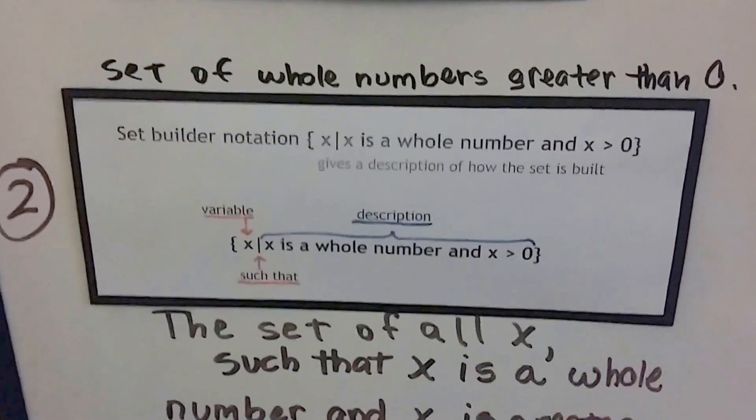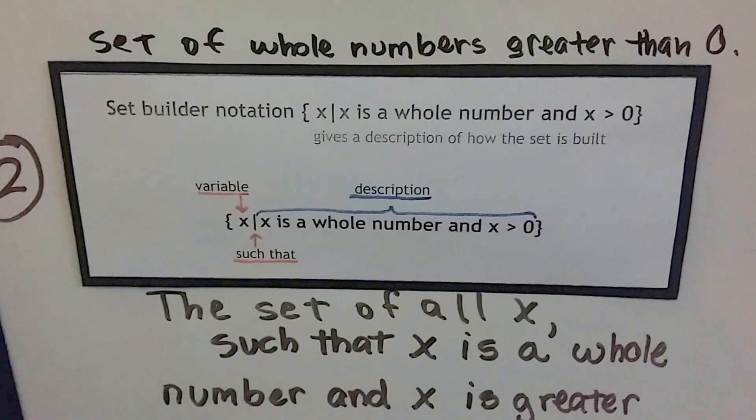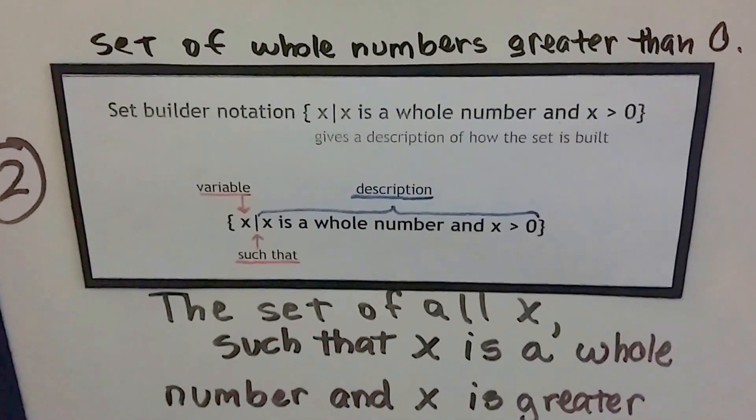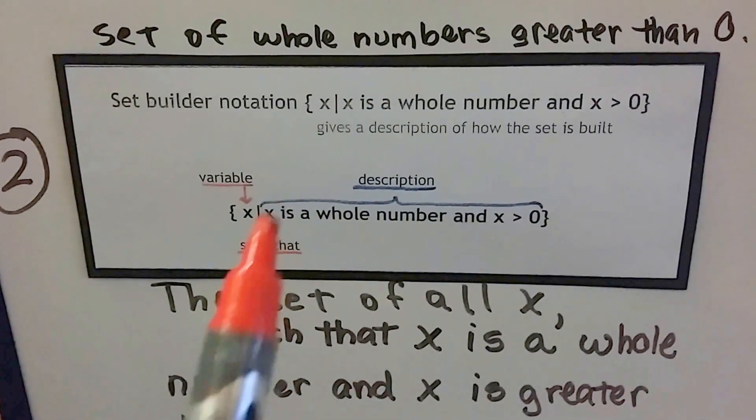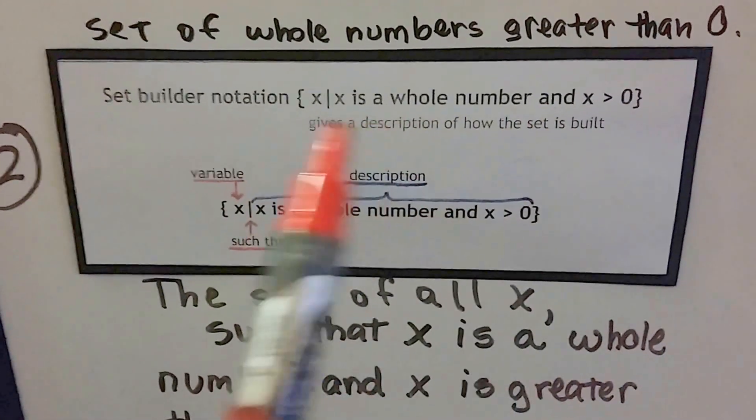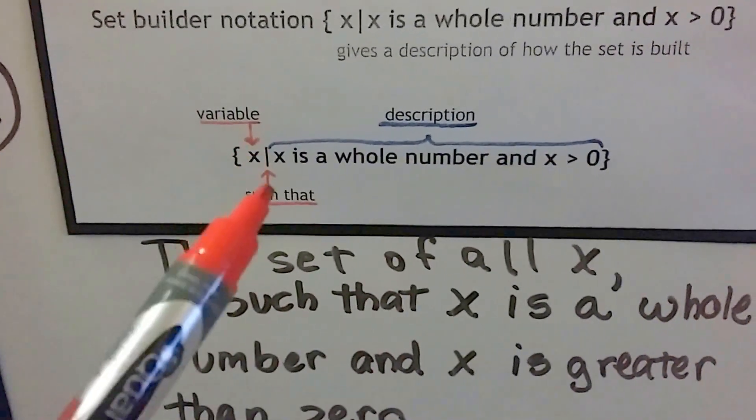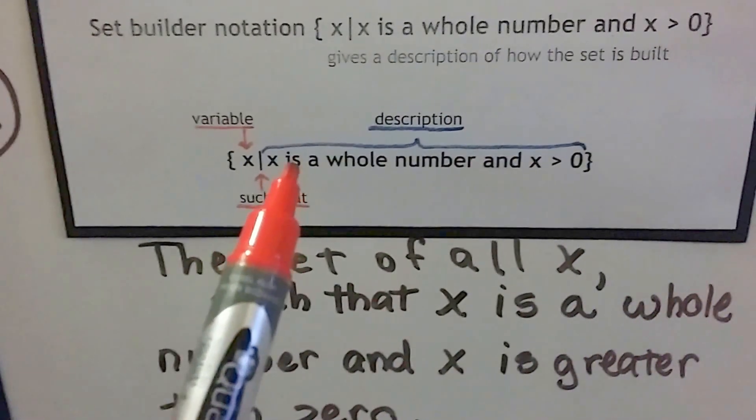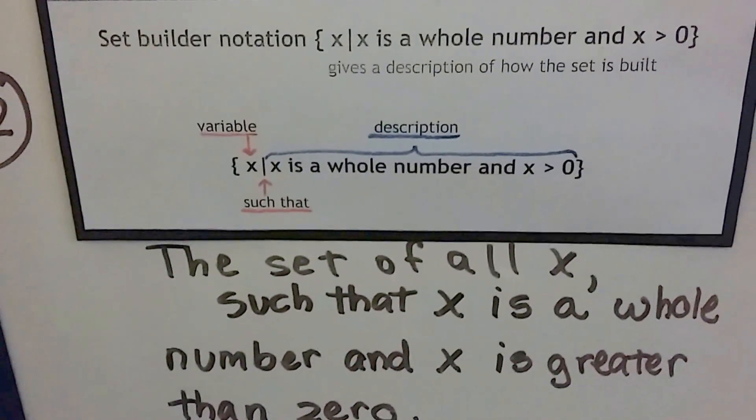But in Set Builder Notation, the set of whole numbers greater than 0 would be written as x, and then a bar, and then another x is a whole number, and x is greater than 0. And see how this gives the description of how the set is built. That's Set Builder Notation.